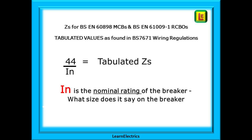Take the number 44 and divide it by the size or rating of the circuit breaker or RCBO. IN, as shown here, is called the nominal current rating of the breaker. Think of N as the number that is stamped onto the breaker. For a 32 amp breaker, IN is 32 amps. For a 6 amp breaker, IN is 6 amps. It is the nominal value.